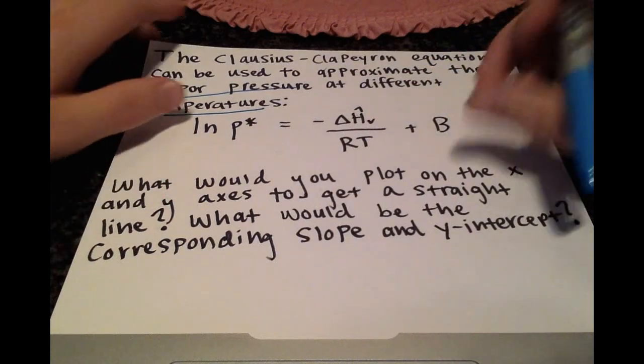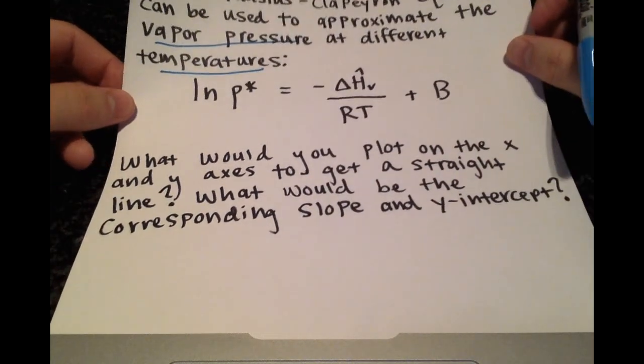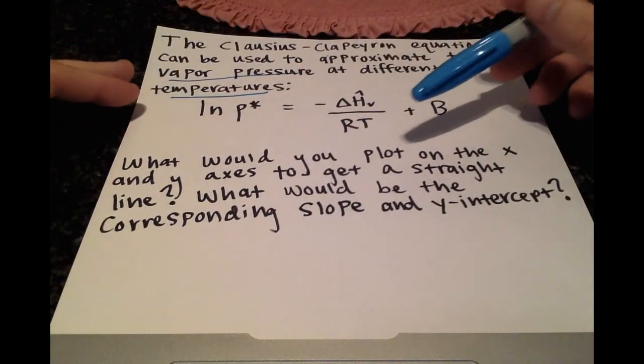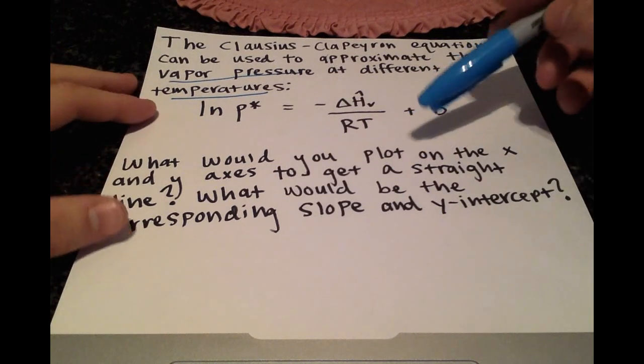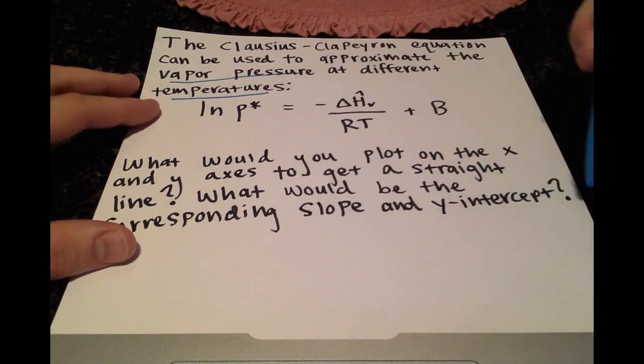And this is our equation here, and they ask, what would you plot on the x and y axes to get a straight line? What would be the corresponding slope and y-intercept?